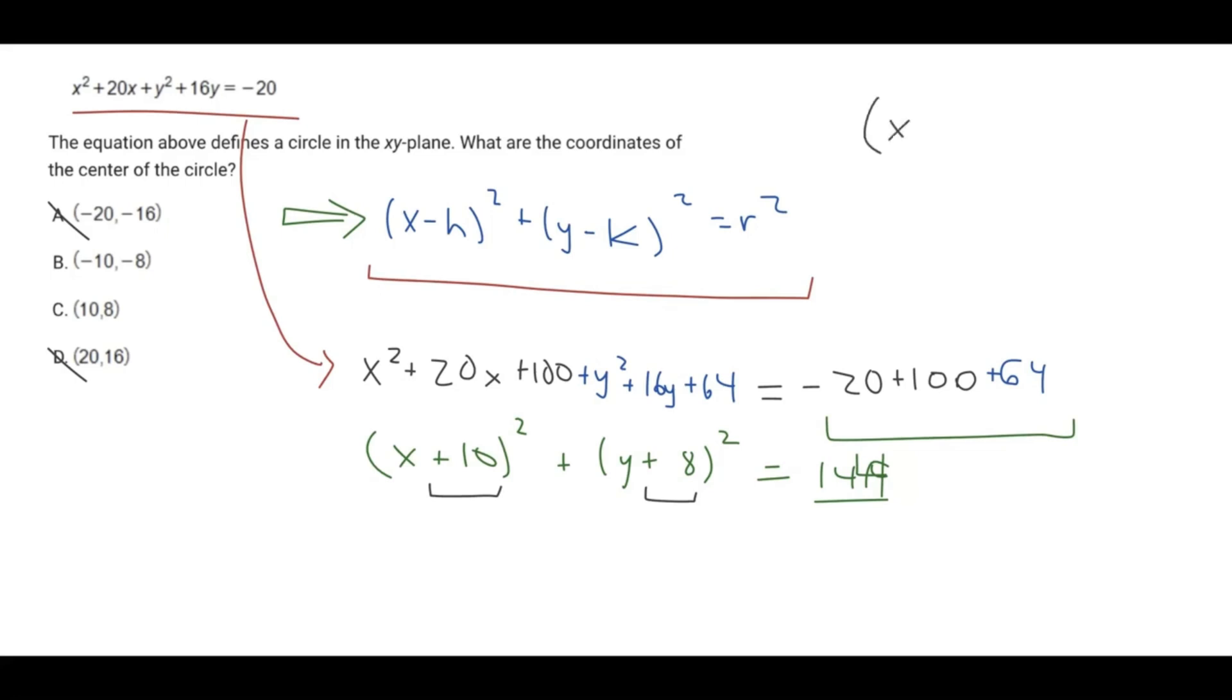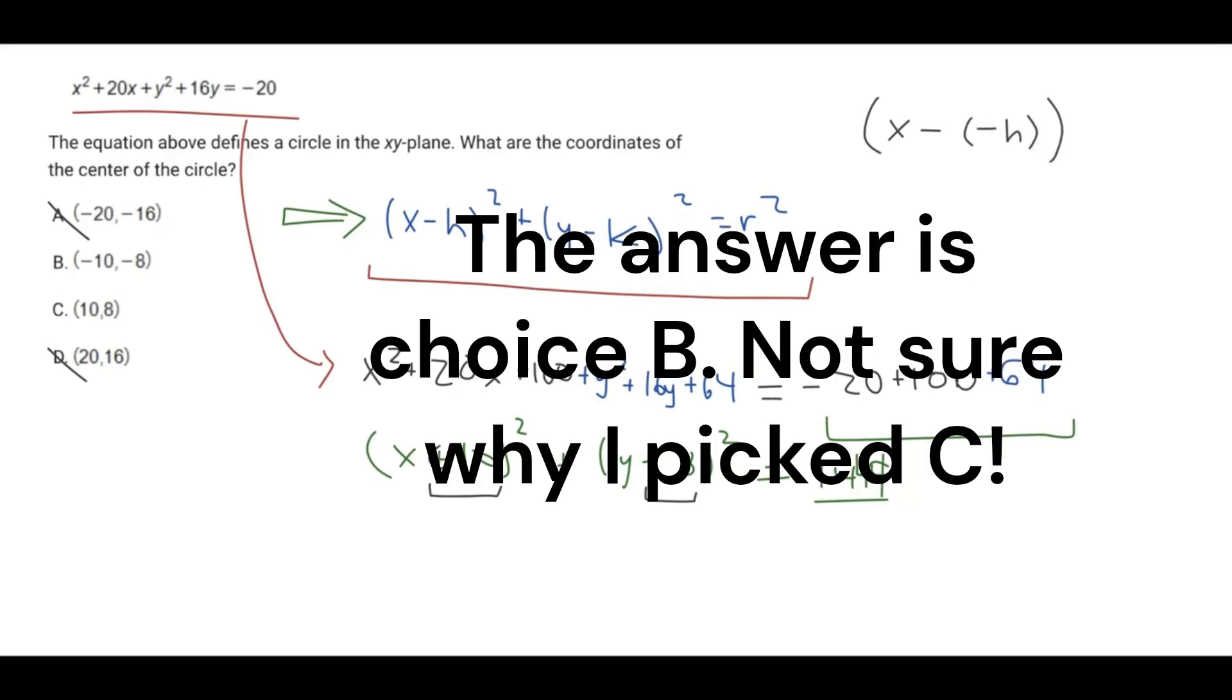Now, why? Well, I'll give you a quick example here. So if you have x minus, this is the standard form. It had a negative value of h. It'll look like this. You're taking, you're subtracting a negative, which gives you a positive, as you can see here. And therefore, our answer here is negative 10, negative 8.